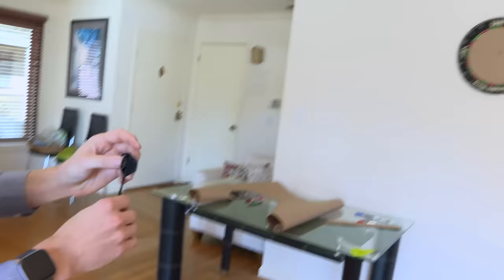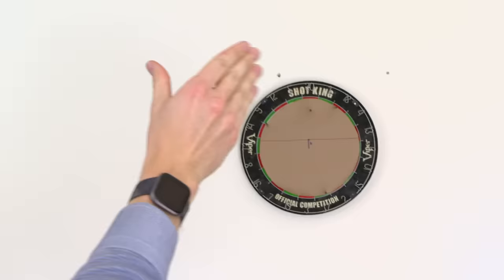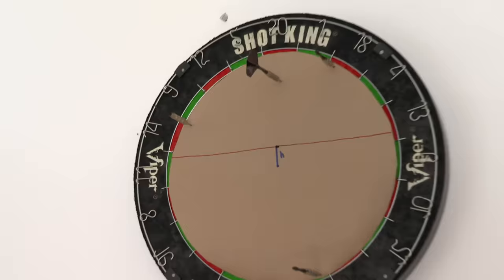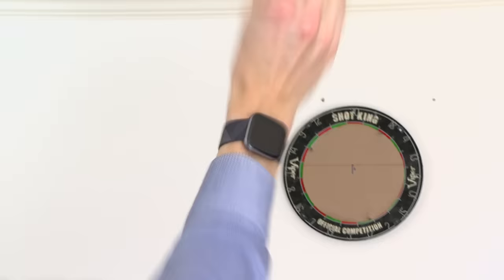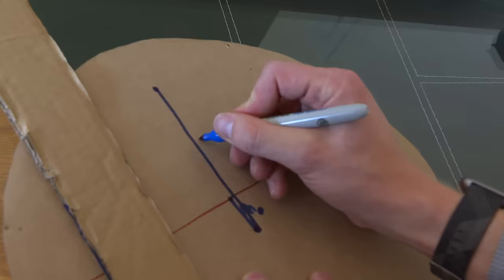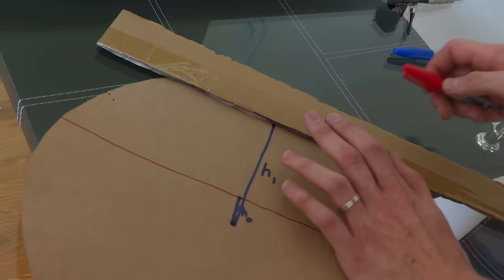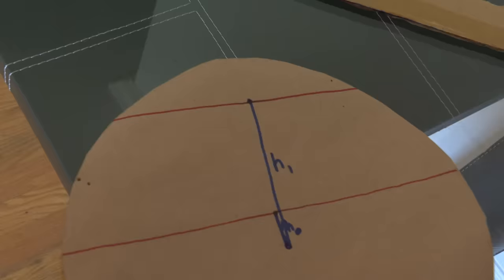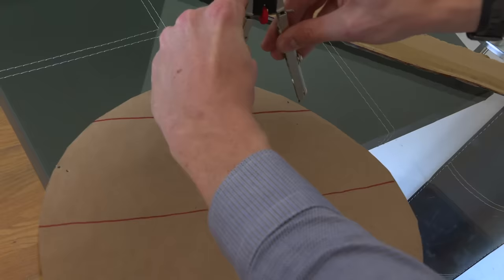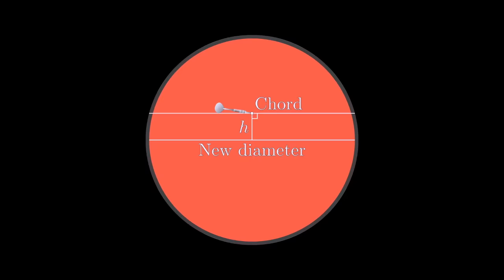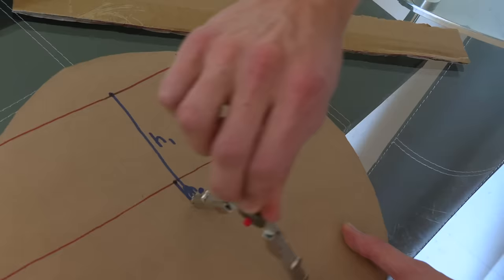Consistency is only a virtue if you're not a screw up. This one's nice and far away from the center, and I'm going to be punished more because it's far away. We'll do the same game — distance is h1. It'll be a chord of the big circle perpendicular to that line. The chord defines the new diameter, but it's kind of easier to think of as half the chord defining the new radius. Because I was closer to the edge of the bullseye, that chord ends up smaller, so the new bullseye is meaningfully smaller.